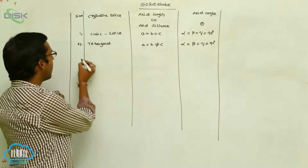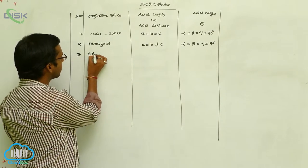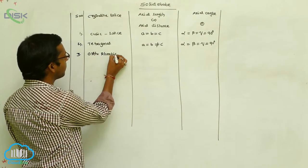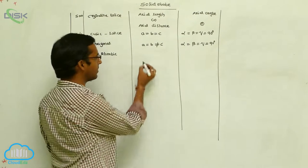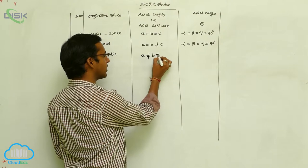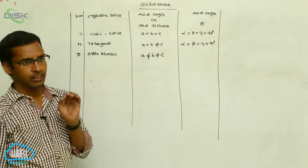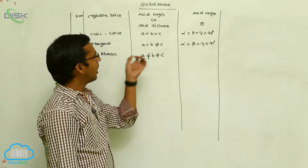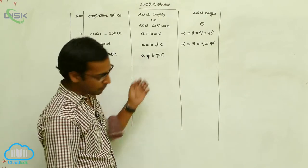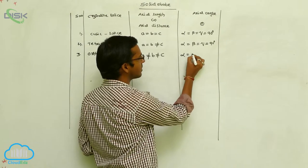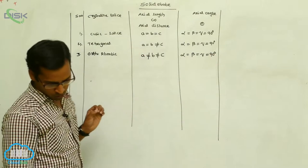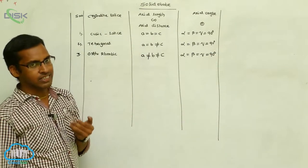Next is the orthorhombic lattice. In orthorhombic, a is not equal to b, and b is not equal to c. However, the angles are again all the same: alpha equals beta equals gamma equals 90 degrees.